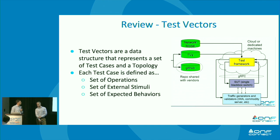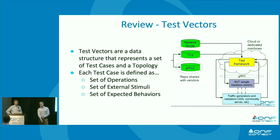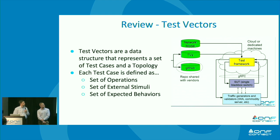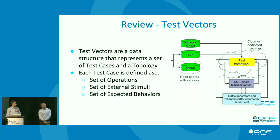As a quick review, test vectors are a data structure that represent a set of test cases and a topology. You take your topology file, your test case — which is defined as a set of operations, a set of external stimuli, and a set of expected behaviors. You feed in your test vectors and your network model into a framework, and you have a device under test and a traffic generator providing those external stimuli.